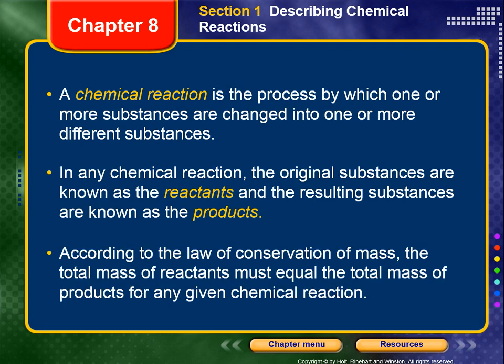A chemical reaction is a process by which one or more substances are changed into one or more different substances. In any chemical reaction, the original substances are known as reactants, and the resulting substances are known as products. According to the law of conservation of mass, the total mass of the reactants must equal the total mass of the products for any given chemical reaction.